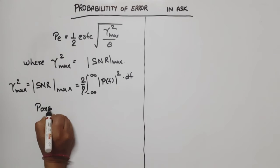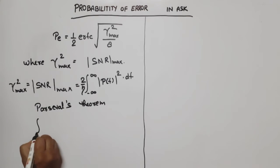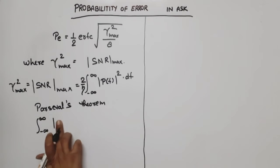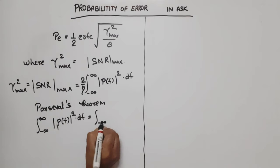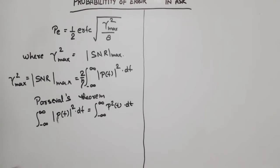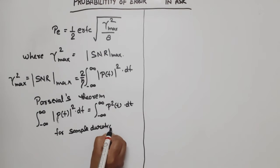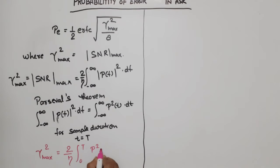By using Parseval's theorem, we found that the integral from minus infinity to infinity of P(f) squared dot df is equal to the integral from minus infinity to infinity of p²(t) dot dt. For a sample duration equal to capital T, gamma-max squared becomes 2 divided by eta, integrated from 0 to T of p²(t) dot dt.